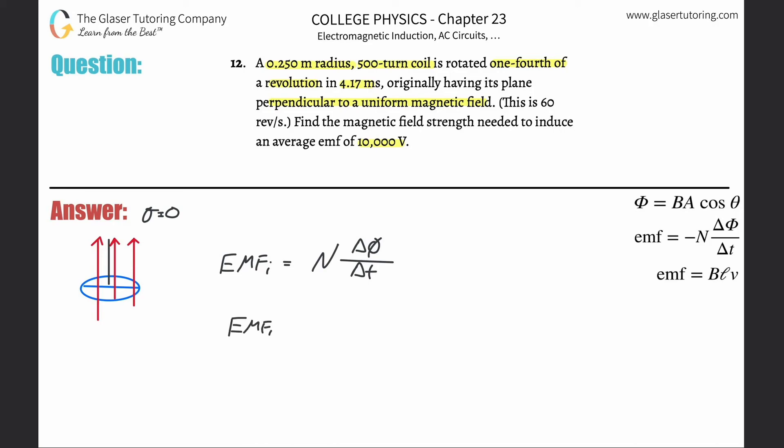I created this formula and explained why it is the case in the other problem. So this will become BA times cosine of theta final minus cosine of theta initial. I'm really concerned about the magnitude, so you can just take the absolute value of this if you want. This will all be divided by the change in time. We are being asked to find the magnetic field strength, so that means I got to know everything else.